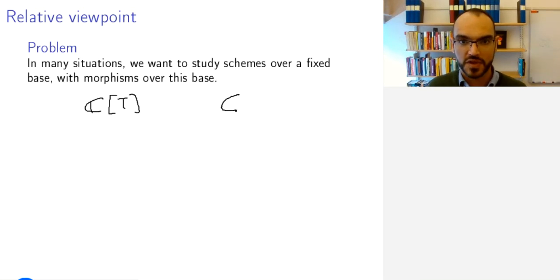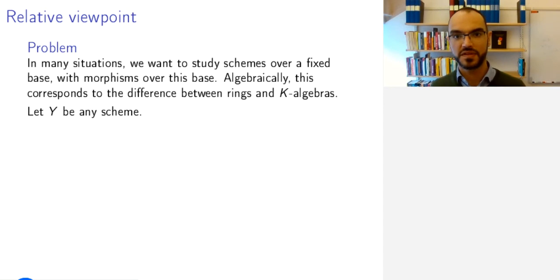For example, if we return to just looking at the complex numbers, that, by the way, as a scheme, is a scheme with underlying set consisting of just one point. Then we can study them as objects over themselves, or as objects over the real numbers, or as objects over the integers, for example. And so, formally, spec C will be viewed as a scheme over spec C, or spec R, or spec Z, or something more general. On the algebraic side, this corresponds to the difference between studying a ring absolutely and studying a ring as a K-algebra. And we'll be able to do this over any base scheme.